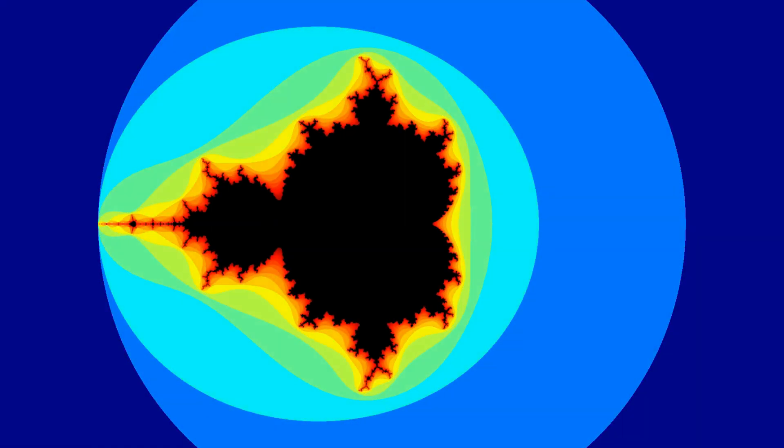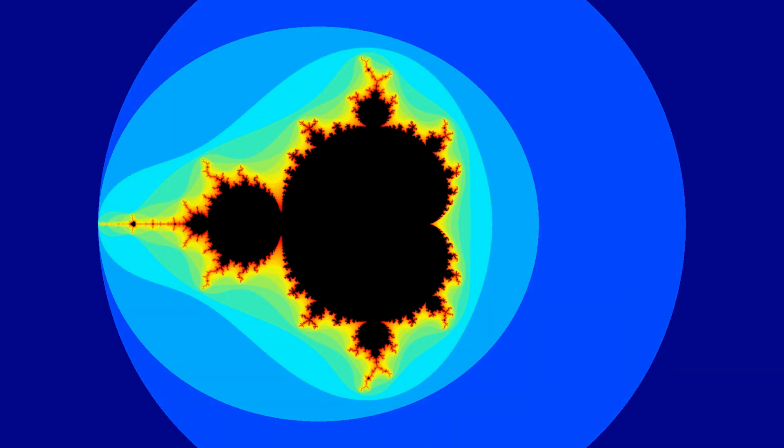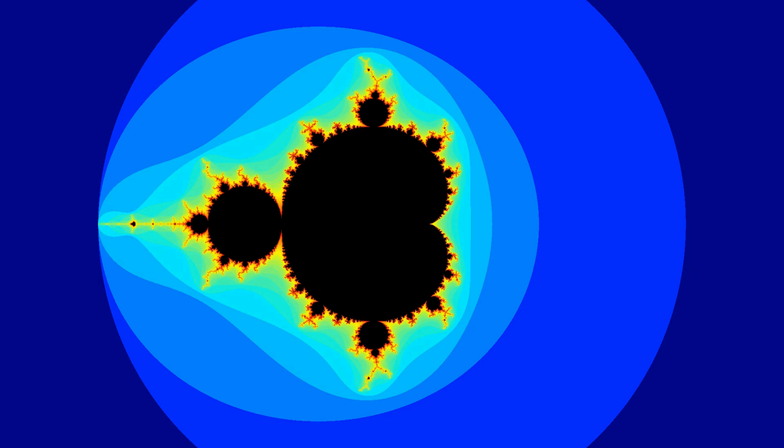The fewer the considered iterations, the worse is the approximation. Especially at the boundary of the Mandelbrot set, much detail is lost with a low number of considered iterations.